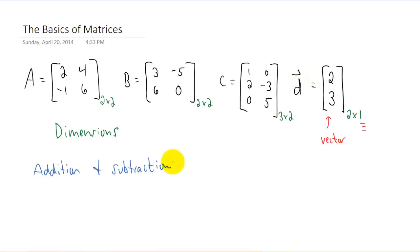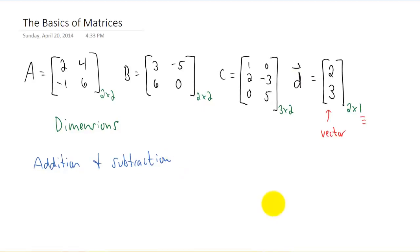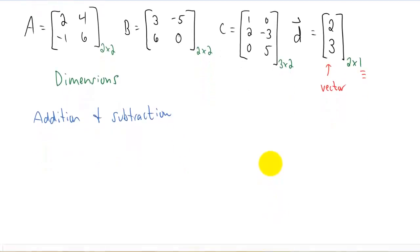There are a whole lot of things that we can do with matrices. The first one being addition and subtraction of matrices. So we can add matrix A plus matrix B. If you've never learned anything about matrix algebra before, the way you add A and B is probably what you would think. You take each element in matrix A and add it to the same element in matrix B. So we're going to get 5, negative 1, 5, and 6.